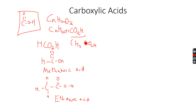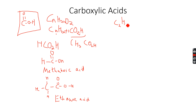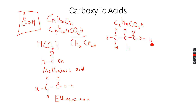We can have a 3-carbon carboxylic acid, so in that case n will be equal to 2, because we already have a carbon atom in the carboxylic group, so 3 minus 1 is 2. That gives us C2H5CO2H. This is propanoic acid because there are 3 carbon atoms in total — one from the carboxylic acid group and two from the alkyl group.